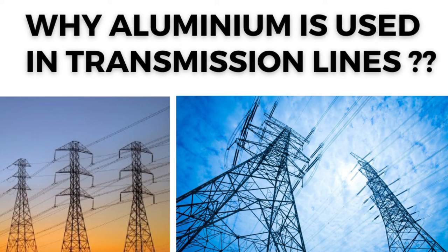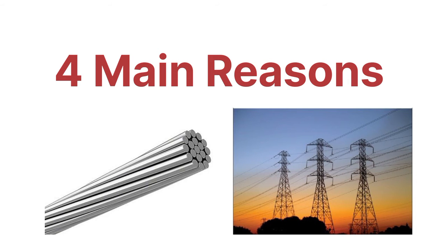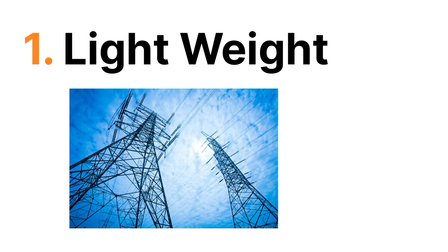Hello friends, welcome back to another video. In this video I'm going to talk about why aluminium is used for the transmission line — why we are not using any other type of material. There are four main reasons for preferring aluminium. The first reason is that aluminium is light in weight and easily transported from one point to another over long distances.